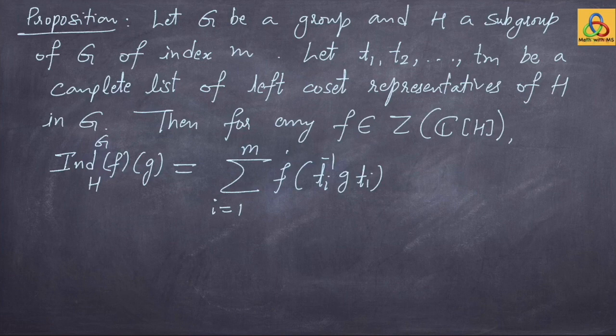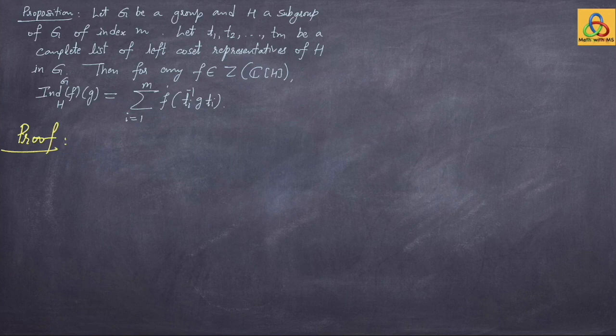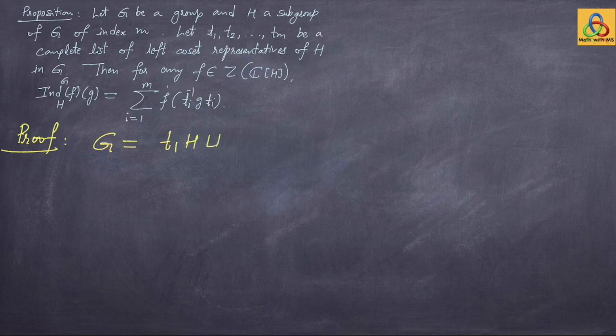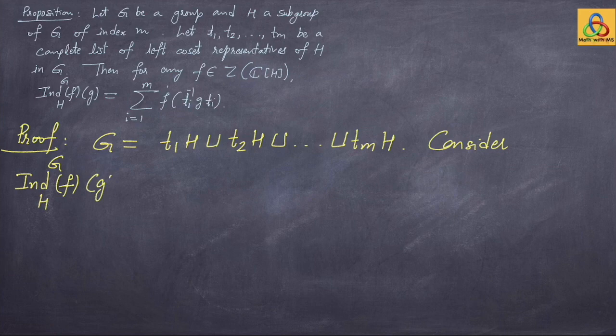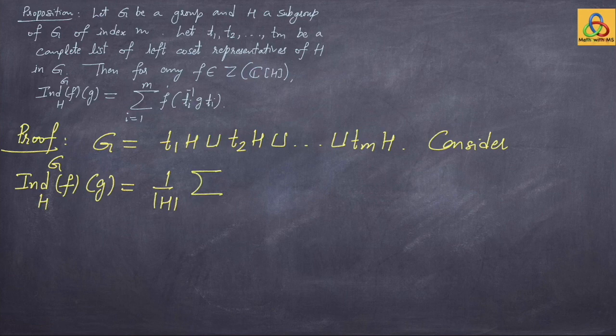Once we fix coset representatives, we have gotten rid of the 1/|H| factor. The proof: since t₁, ..., tₘ are coset representatives, G decomposes as the disjoint union of t₁H, t₂H, ..., tₘH. Write the induction formula: Ind(f)(g) equals (1/|H|) times the sum over x in G of f-dot(x⁻¹gx). Decomposing G into cosets, this becomes a double sum (1/|H|) times the sum over i from 1 to m and over h in H, giving f-dot(h⁻¹ tᵢ⁻¹ g tᵢ h).